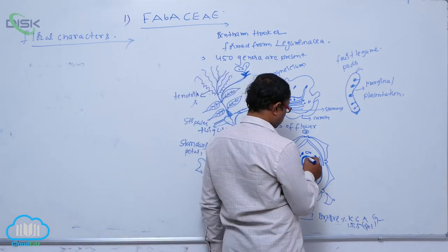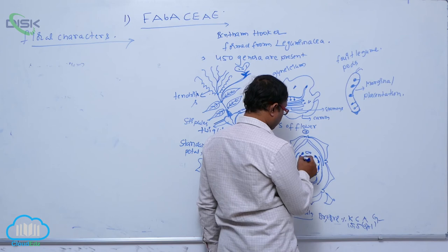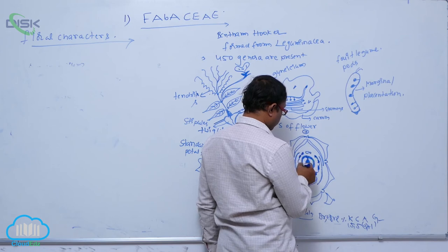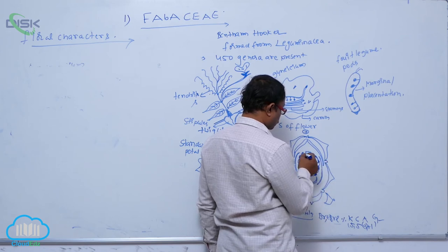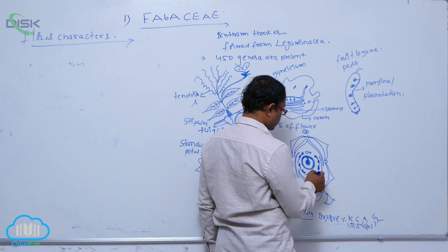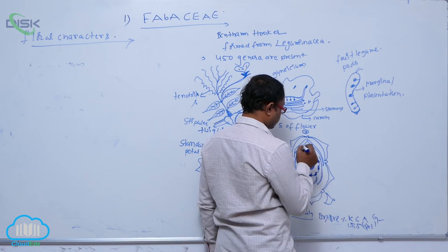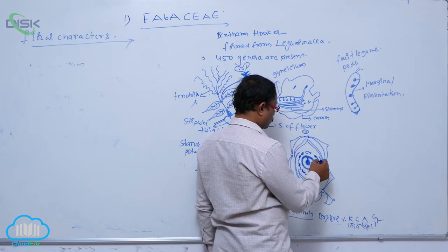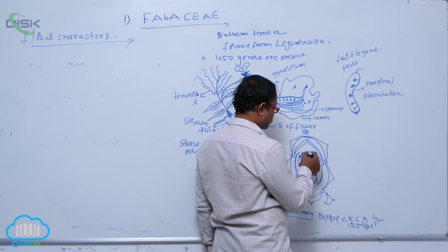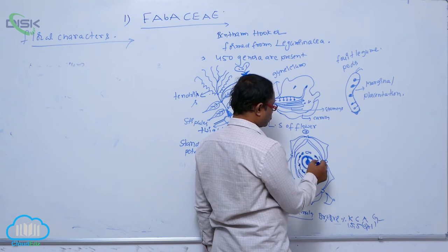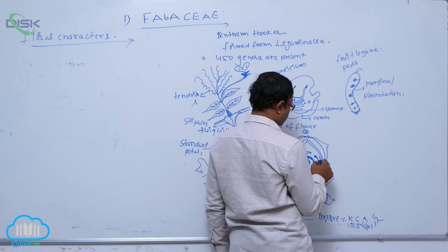So, in the stamen part, there are totally ten stamens — one, two, three, four, five, six, seven, eight, nine. Nine stamens are fused to form one bundle. One bundle remaining, one is singular. That is known as nine plus one.